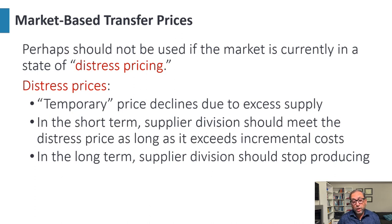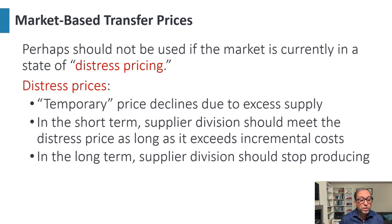Distress prices are temporary price declines due to excessive supply. In the short run, the supplying division should meet the distress price as long as it exceeds the incremental cost. In the long run, the supplying division should stop producing.